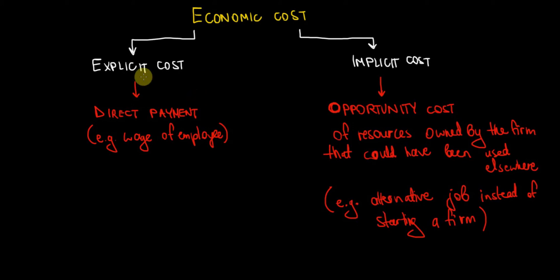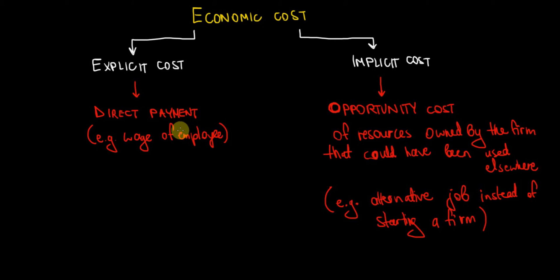So what are going to be our explicit costs? These are going to be the direct payments that we make as a firm. For instance, when we pay for our employees, the wage of an employee is going to be an explicit cost — we pay for it directly.